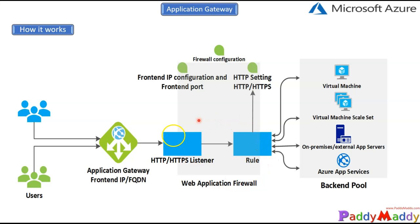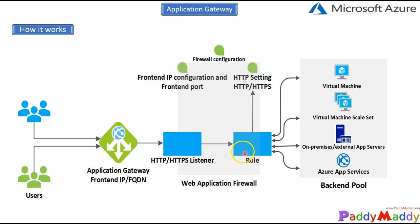The traffic is handed over to the listener, which checks whether the incoming traffic has the proper port and that rules are configured. If you have configured a Web Application Firewall (WAF), it evaluates the rules to determine whether the incoming request is valid, suspicious, or a security threat. In detection mode, WAF only logs the activity; in prevention mode, it actually blocks the security threat.